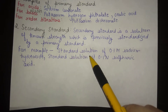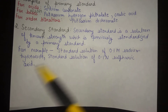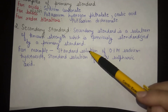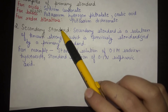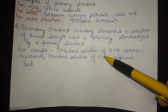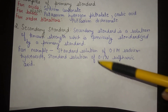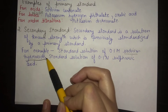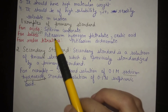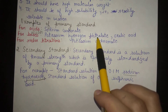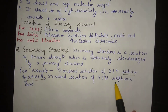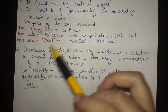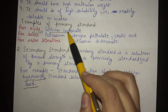For example, a standard solution of 0.1 molar sodium hydroxide and a standard solution of 0.1 normal sulfuric acid are both secondary standards, because they were standardized with the help of a primary standard. Sodium hydroxide is standardized by titrating it with potassium hydrogen phthalate, which is a primary standard, and sulfuric acid is standardized by titrating it with a primary standard such as sodium carbonate.